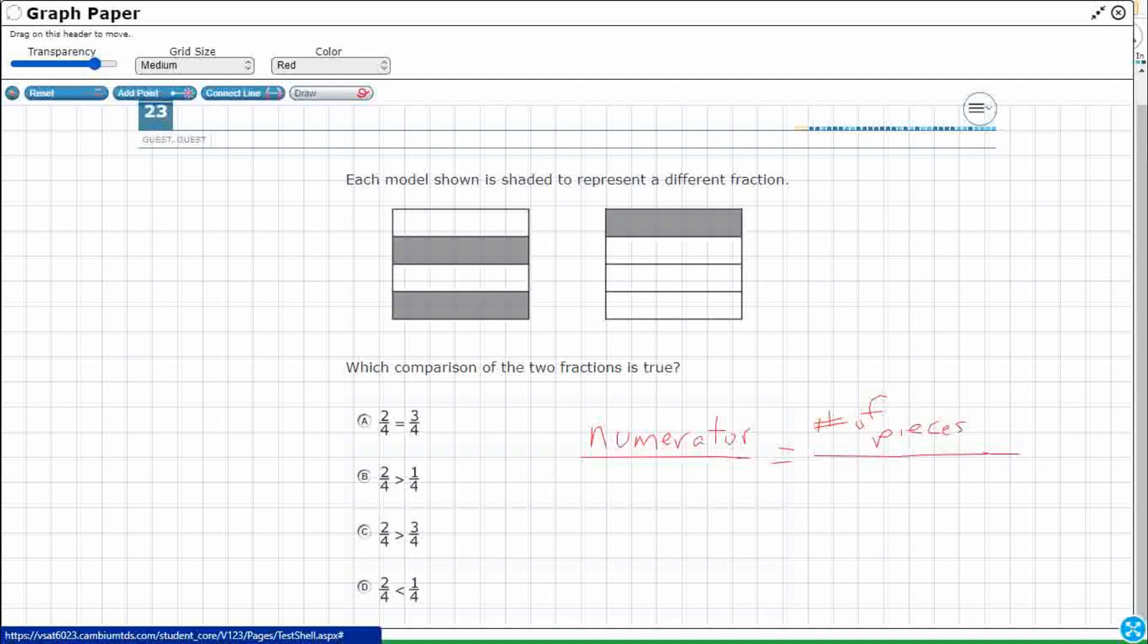So the number of pieces that are shaded for this problem, but the numerator kind of changes based on whether you're looking at something that's shaded or how many marbles are blue out of this jar. So it might not always be shaded, but it's the number of pieces you're talking about.